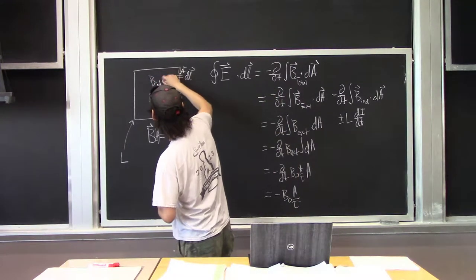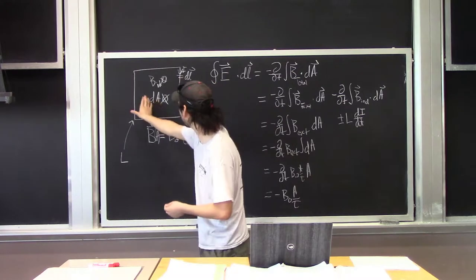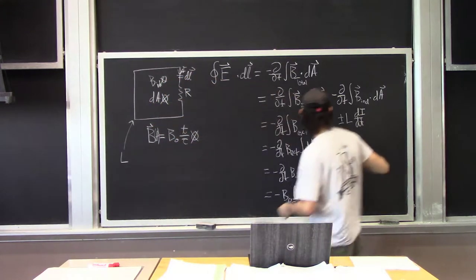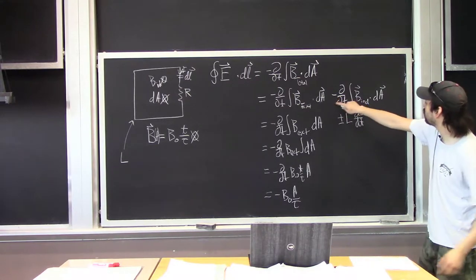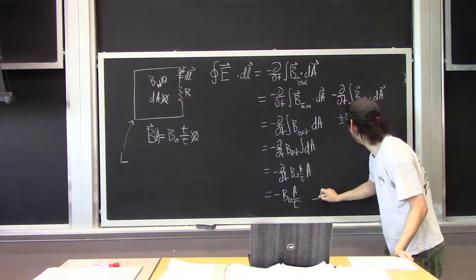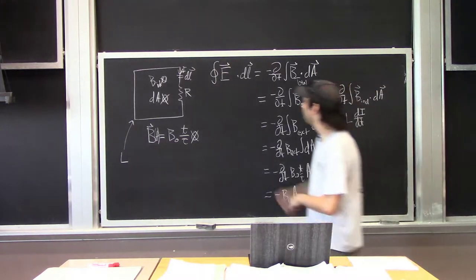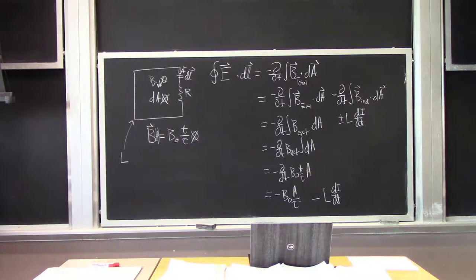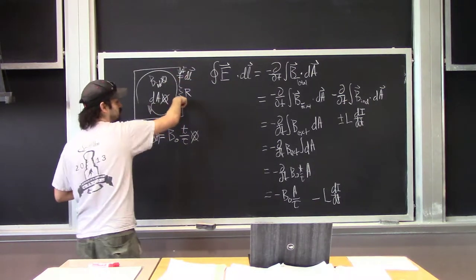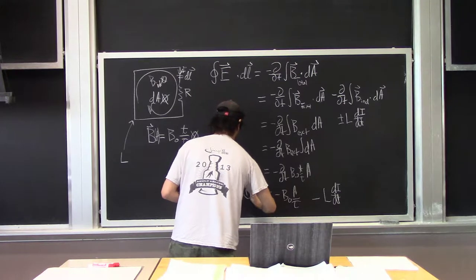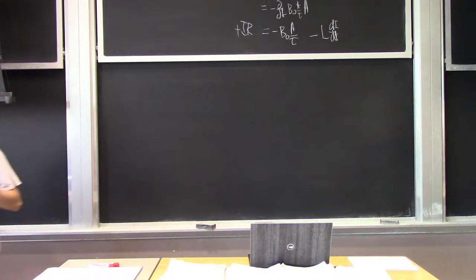B_induced is pointing in because using the right-hand rule: thumb in the direction of I going around like this, curl in the direction of B_induced — it goes this way. So the dot product gives a positive, but there's a negative sign out front, and because of that negative sign this term ends up being minus L di/dt. The left-hand side is exactly the same as in our time-independent circuits: dL parameterizes the loop, the current goes through the resistor, giving plus IR.